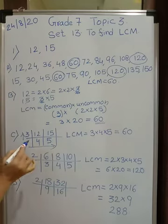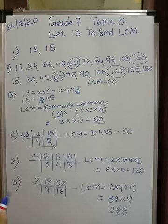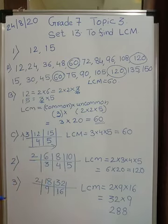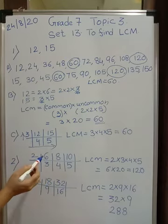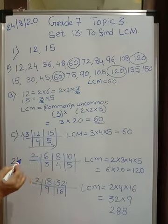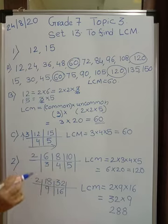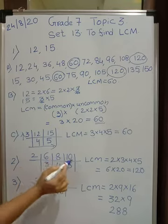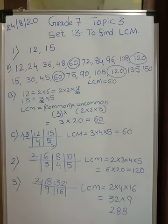Henceforth I am going to follow this division method — the choice is yours, but this is the easier one. Now there are 3 numbers in the second problem: 6, 8, and 10. Listen to the rules: first, take the smallest prime number which divides all 3 numbers at the same time.